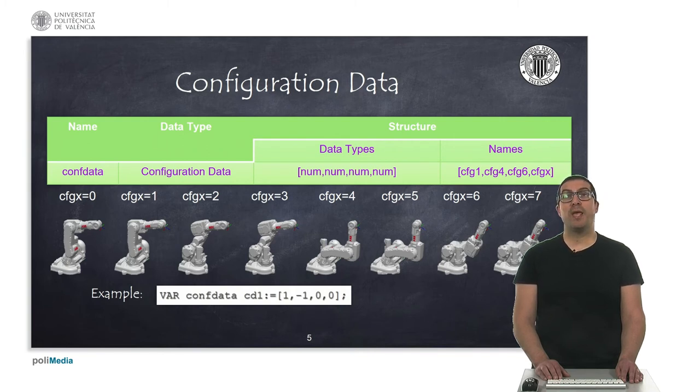As you may guess, there might be ambiguous values. That is, the number 4 and minus 4 represent actually the same quadrant and number. Number 3 and minus 3 also the same. In addition, CONF data also includes a fourth value. In this case, CFGX, that allows defining the robot configuration with a number from 0 to 7. Here, I show the 8 possible configurations for an IRB 140 robot.